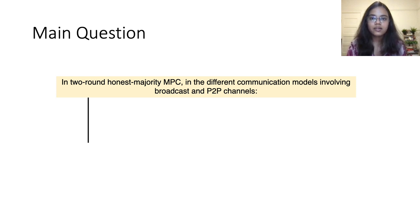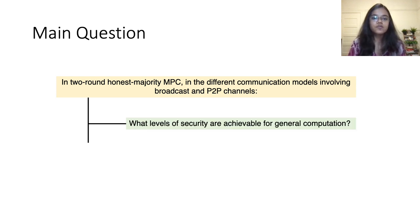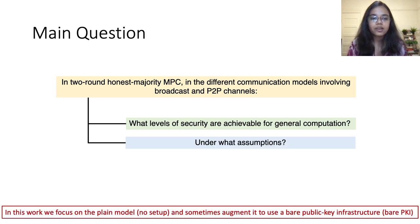As mentioned earlier, in this work we consider the two-round honest majority setting and investigate, in different communication models involving broadcast and point-to-point channels, what levels of security are achievable and under what assumptions. We primarily focus on the plain model, that is without any trusted assumptions.